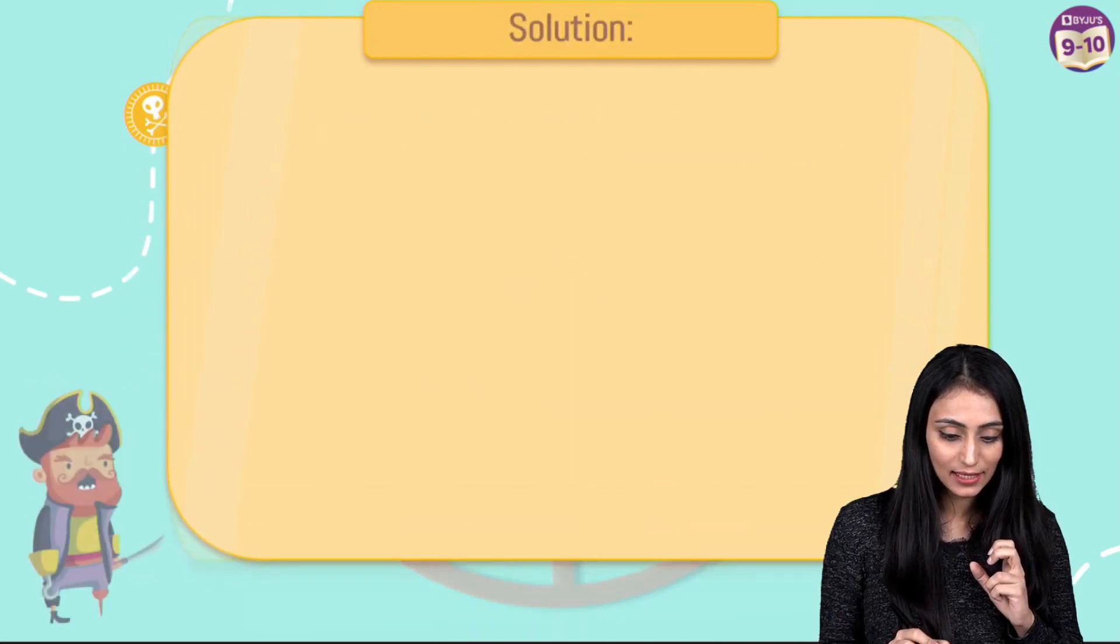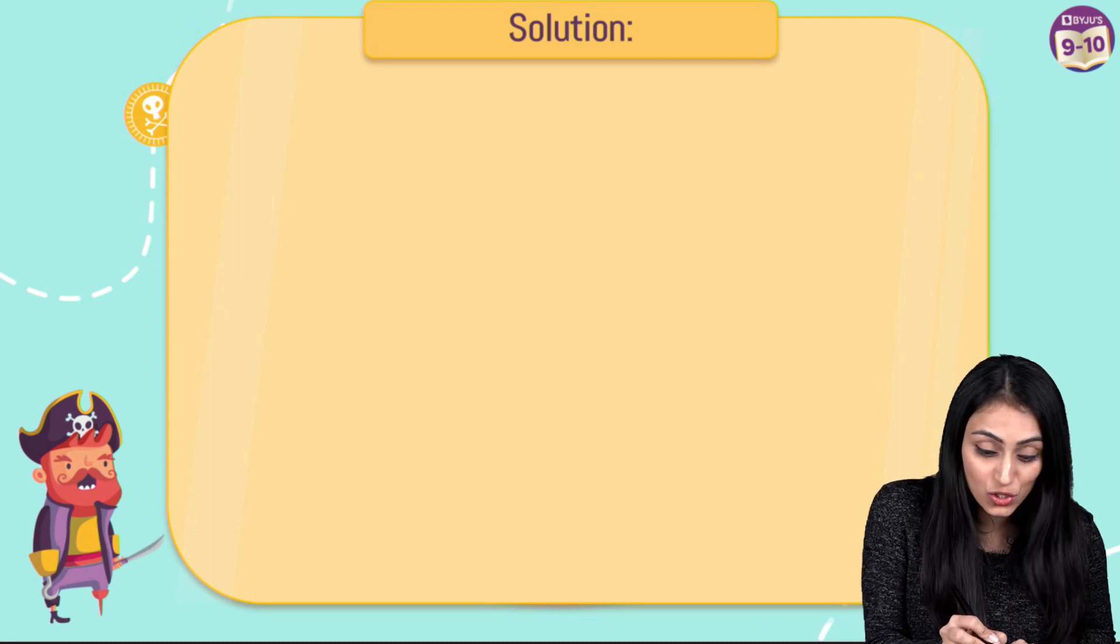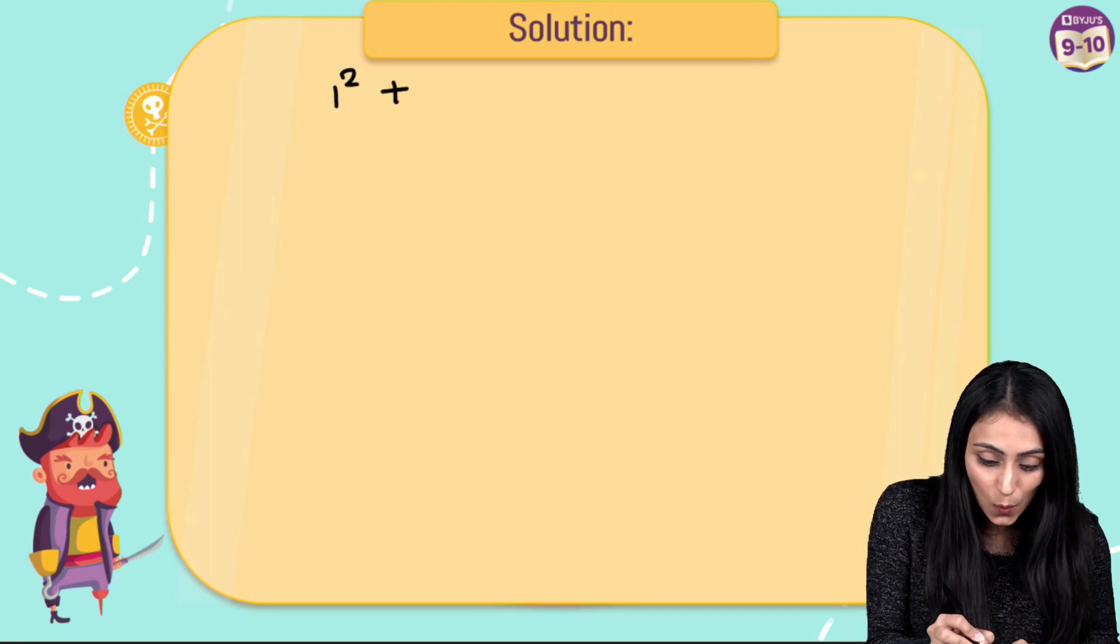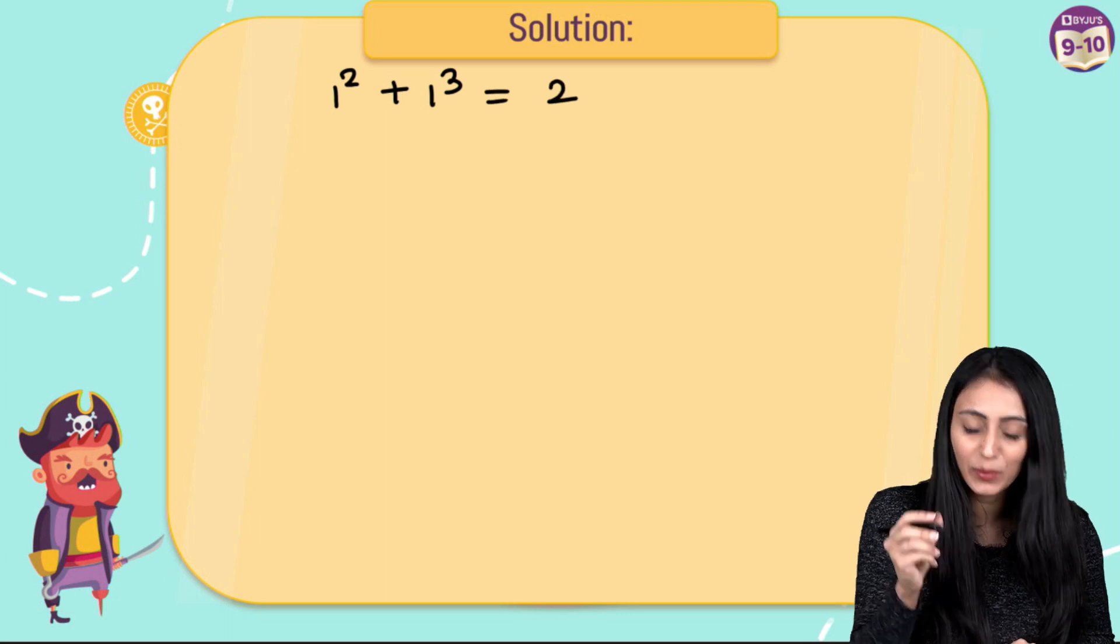So what we can say is, I can simply write it down in this way. So the first term was 2, right? I can write it this way, 1 square plus 1 cube, that would be equals to 2.